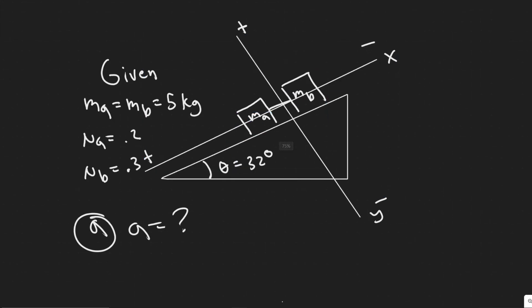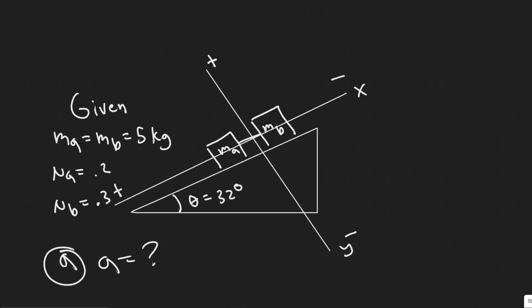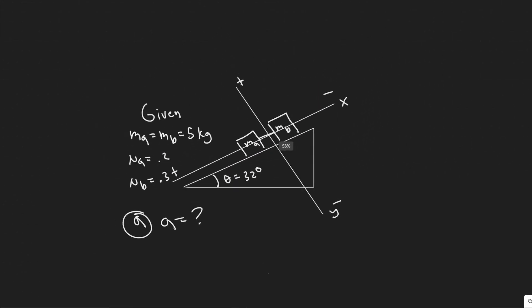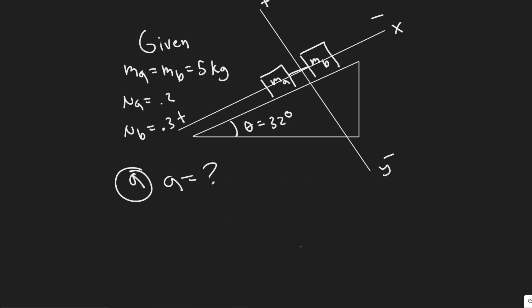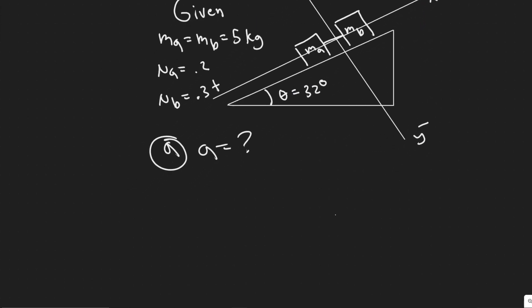Any force going to the left is positive, any force going to the right is negative. We're going to sum the forces in the x direction for each of the blocks, treating them as two independent systems. That's going to allow us to solve for the unknowns. So I'll start with box A.